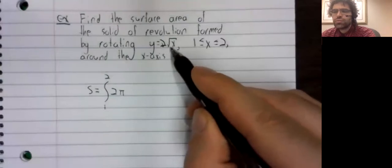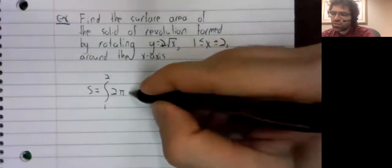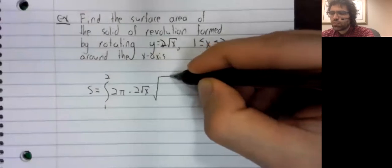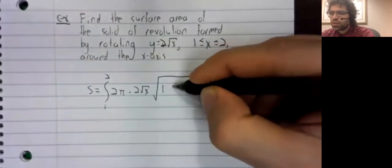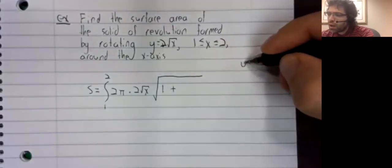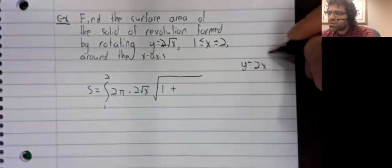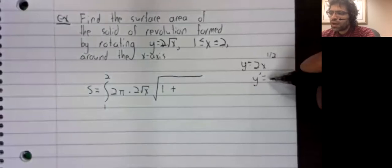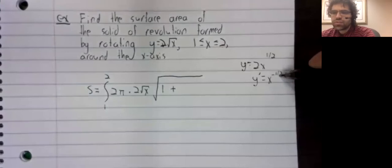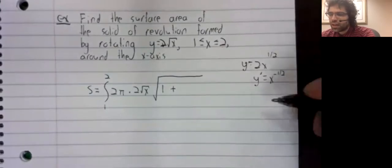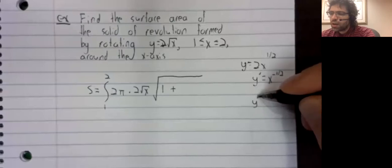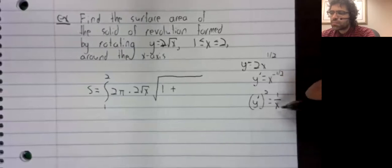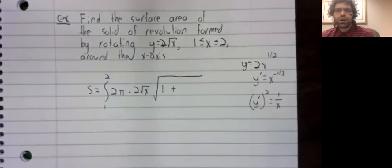times 2 of the square root of x times the square root of 1 plus... Okay, y equals 2x to the 1 half. y prime, then, is x to the negative 1 half. And y prime squared is 1 over x.